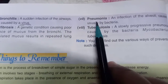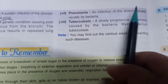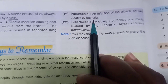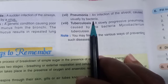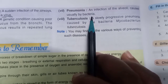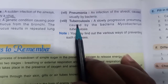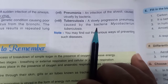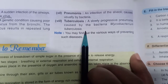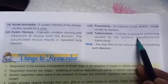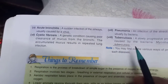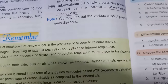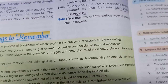Another lung disease is pneumonia — an infection of the alveoli usually caused by bacteria. Then there is tuberculosis, a slowly progressive pneumonia caused by the bacteria mycobacterium tuberculosis. You have to learn the name of this bacteria.